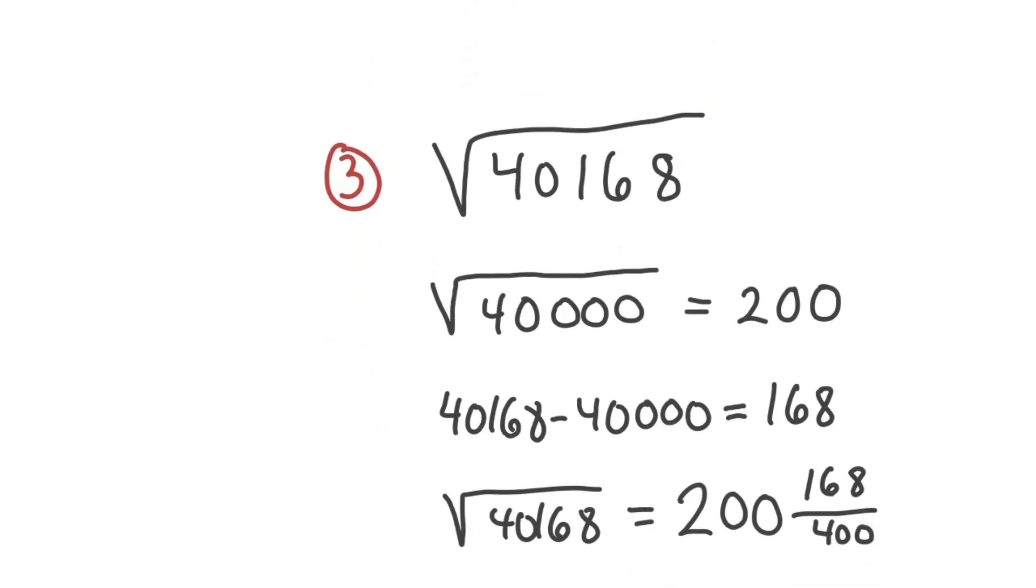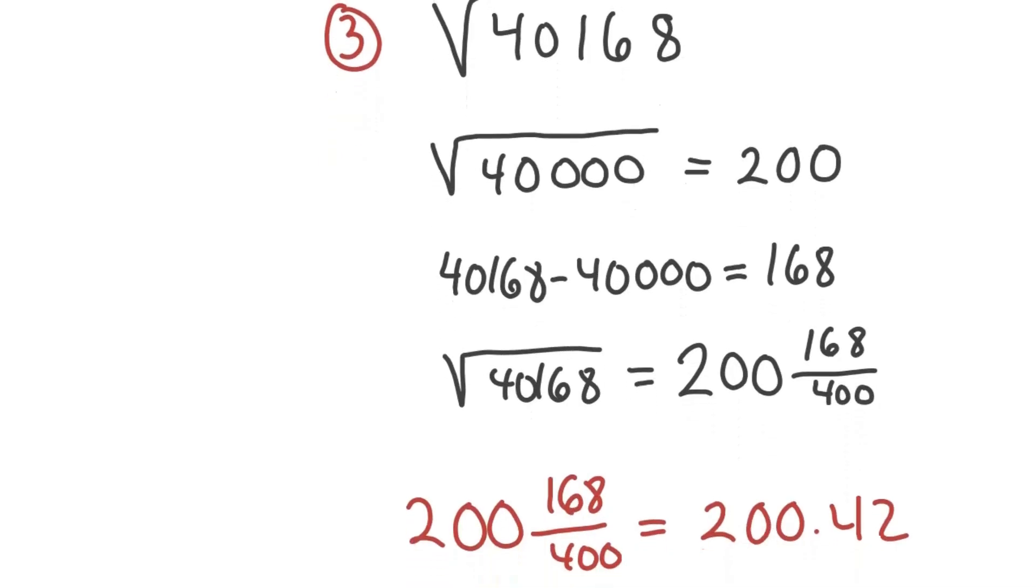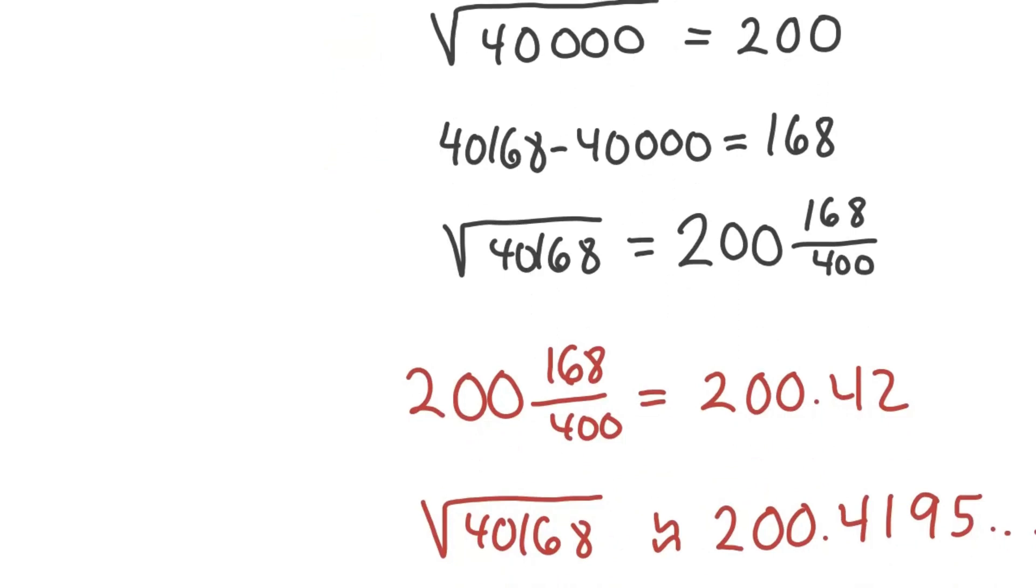So our answer here is 200 and 168 over 400, which as a decimal is 200.42. Actual value of square root 40,168, 200.4195. We're close again.